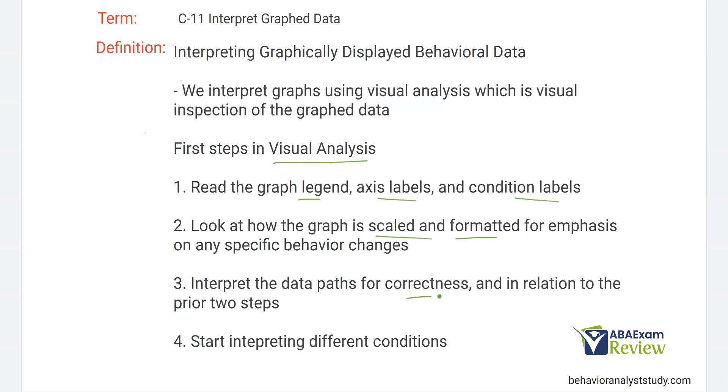You then want to interpret data paths for correctness and in relation to the prior two steps, make sure all your data paths are connected and not connected across condition change lines. You're just making sure everything looks okay. Once everything looks fine, you have a handle on the behavior, we can start interpreting the different conditions.